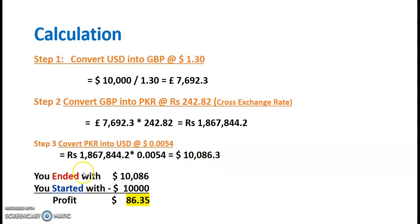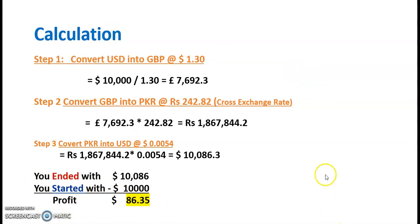We ended with $10,086, having started with $10,000 only. So the profit is $86.35. This is how we can earn through triangular arbitrage.